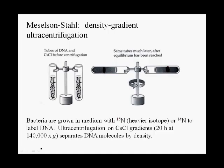They used a method called density gradient ultracentrifugation. In this technique, they put into centrifuge tubes a solution of DNA in cesium chloride — high-density cesium chloride greater than 5 molar.